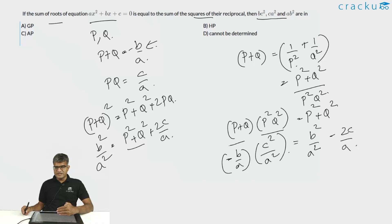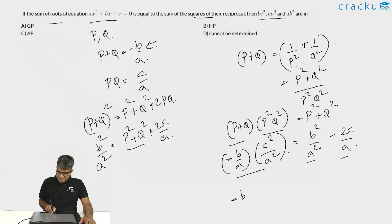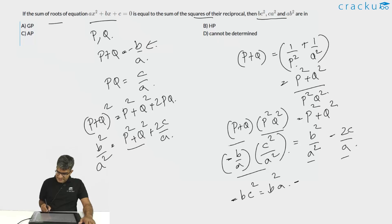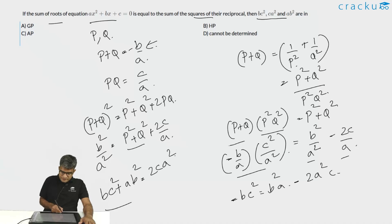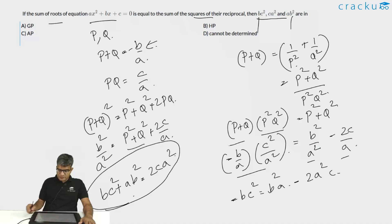Multiplying the entire equation by a³ to cancel all denominators gives: -bc² = b²a - 2a²c, which simplifies to bc² + ab² = 2ca². Looking at this equation, we have bc², ab², and a²c — they are in arithmetic progression, which is option C.